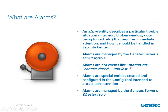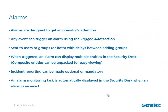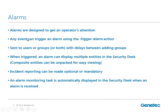In our case, it will be an operator or whoever is in front of our Security Desk application. The alarms are being managed by the directory role. Alarms are designed to get the operator's attention. It's very important to understand that we must be a recipient of the alarm to be able to get that alarm in Security Desk. If you're not a recipient — when we create alarms, we have to add a recipient or a group that we need to send the alarms to. If we're not part of that group, then we're not going to get that alarm.